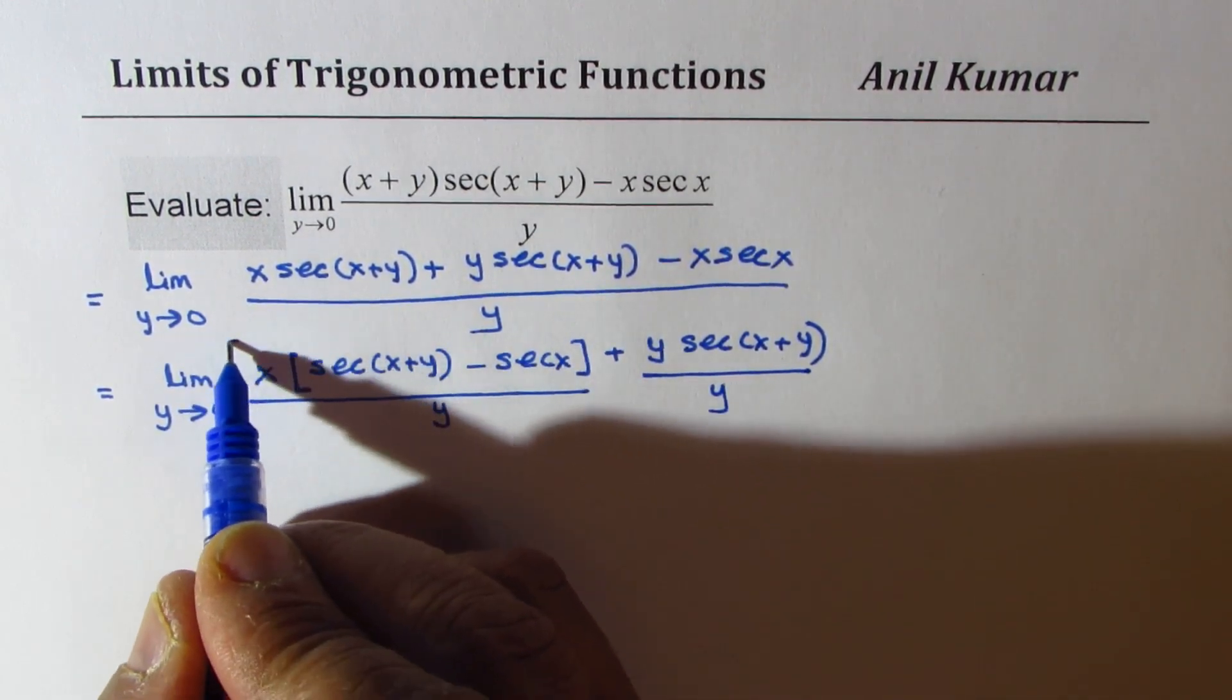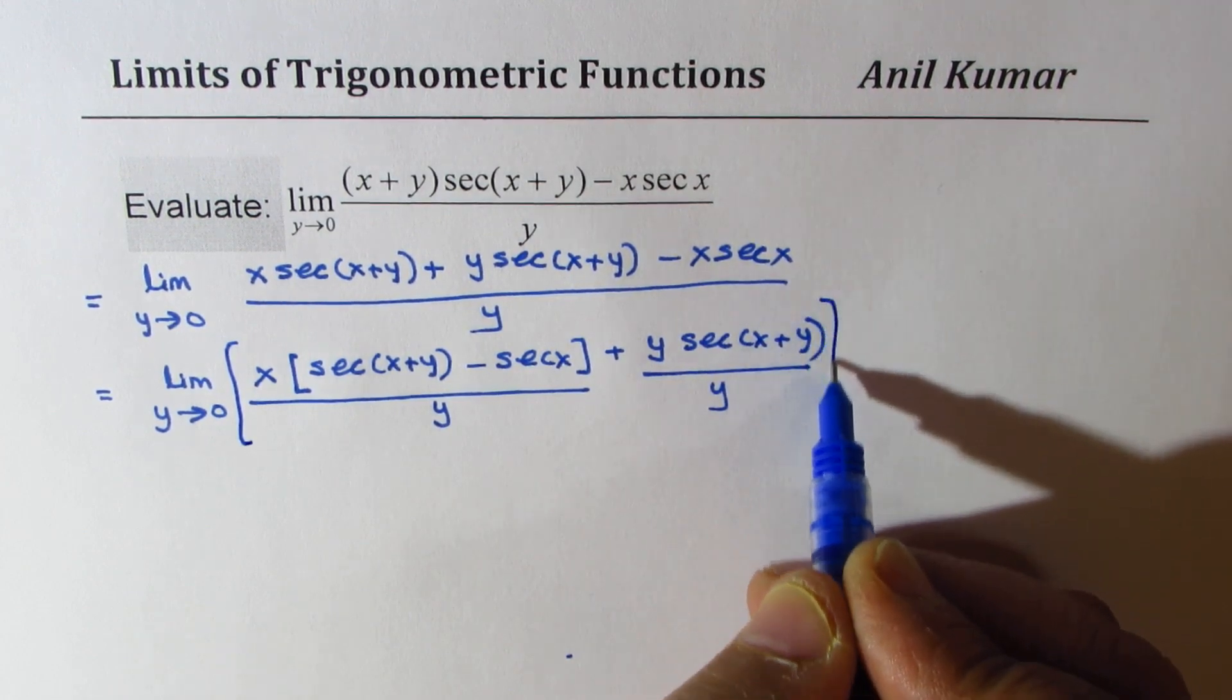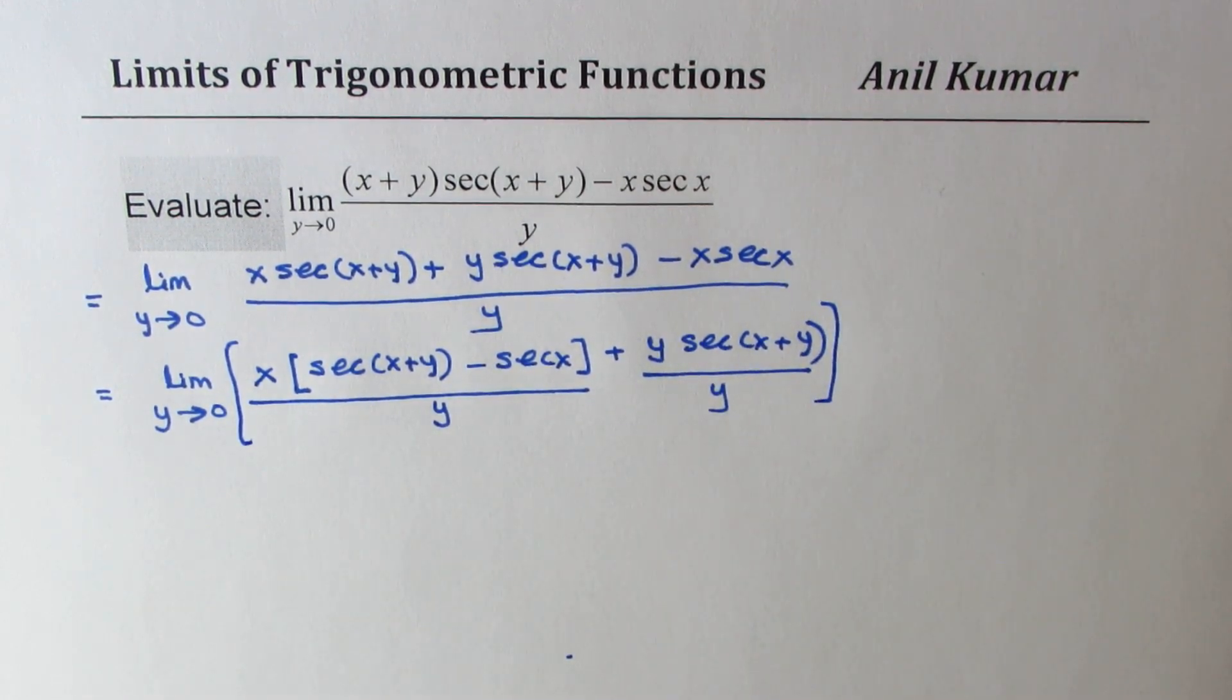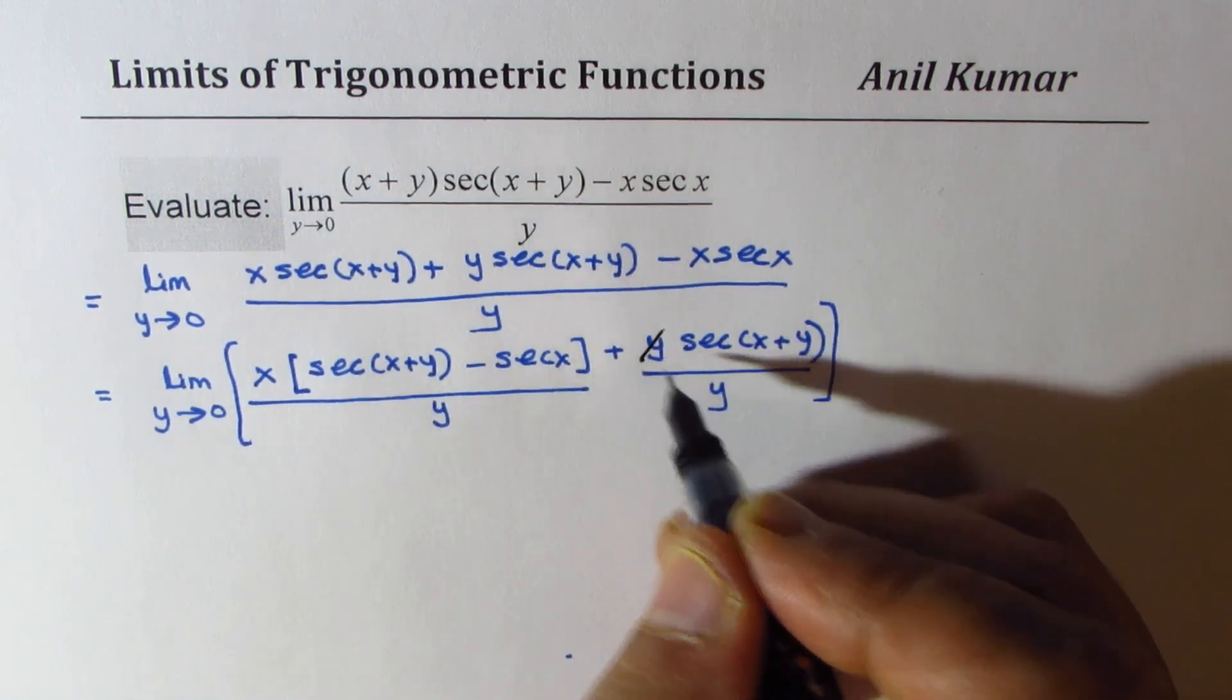Now that's a common denominator and limit is for everything, so that is how you would write it. Now we could cancel this y.